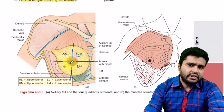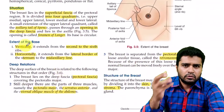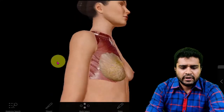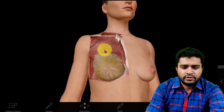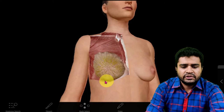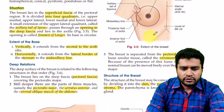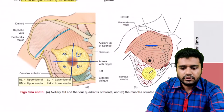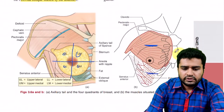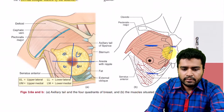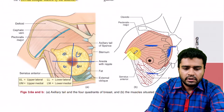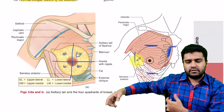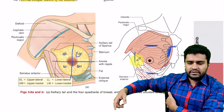Now let's learn the extent of the breast tissue in two forms: vertical extent and horizontal extent. Vertically, it is situated from the second rib to the sixth rib. Horizontally, it extends from the lateral border of the sternum to the mid-axillary line. So the extent is: second to sixth rib vertically, and from the lateral border of the sternum to the mid-axillary line horizontally.